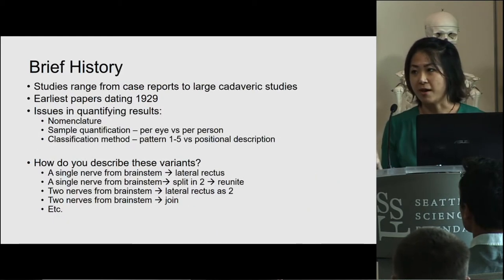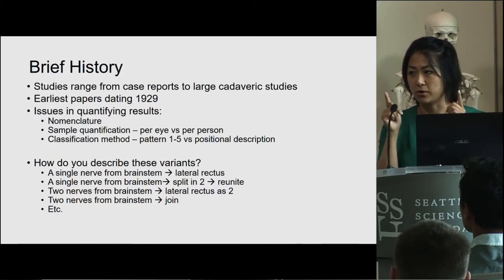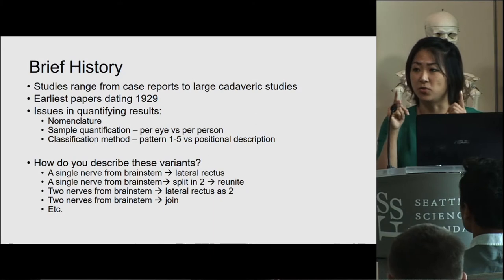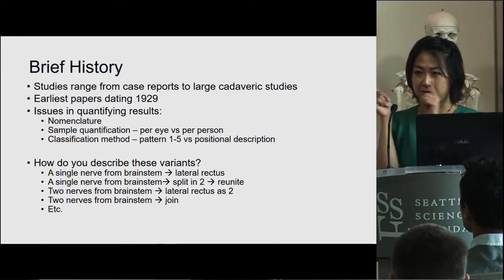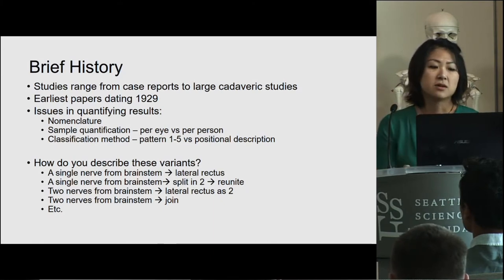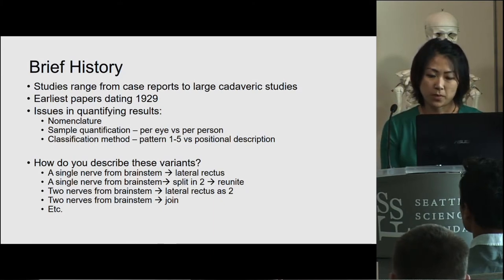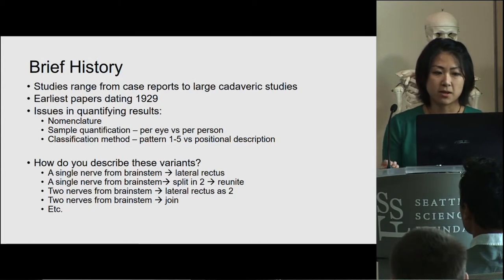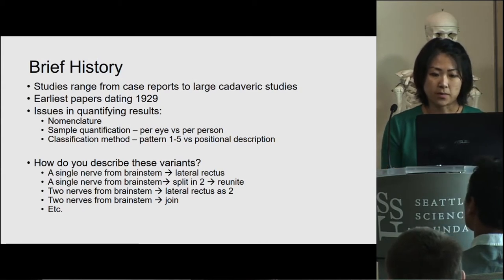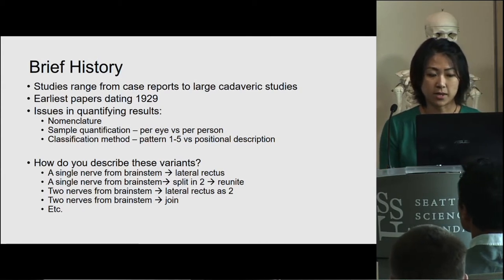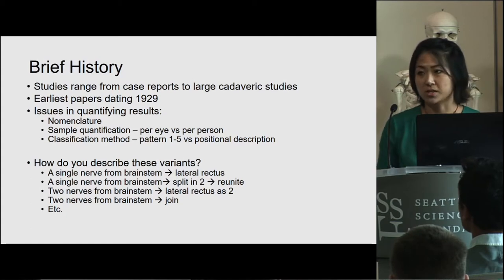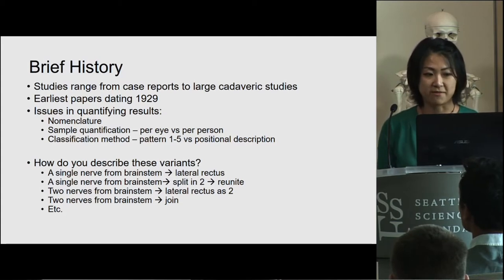When you have abducens nerve palsy — a deficit of your abducens nerve — you have difficulty moving your eyes horizontally, specifically laterally. This is the most common extraocular nerve palsy. With all these factors in mind, it's clear that these variations warrant further investigation.